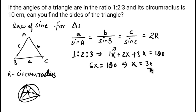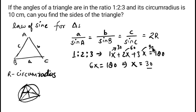From x = 30°, the three angles are: first angle = 1x = 30°, second angle = 2x = 60°, and third angle = 3x = 90°. So the angles are 30°, 60°, and 90° — this is a right-angle triangle!